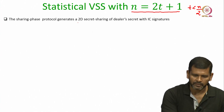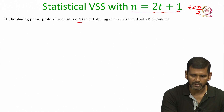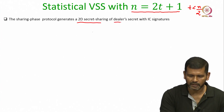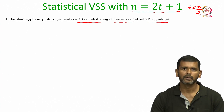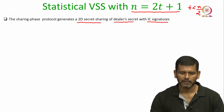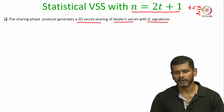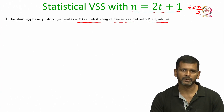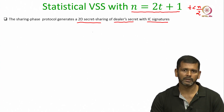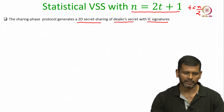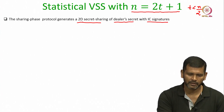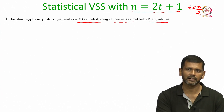The sharing phase protocol of this VSS scheme generates a 2D secret sharing of the dealer secret with IC signatures in a verifiable fashion. If the dealer is honest then the privacy of the dealer secret will be maintained, and verifiability ensures that even if the dealer is corrupt, at the end of the sharing phase protocol there is some value which has been secret shared in a 2D secret shared fashion with IC signatures.